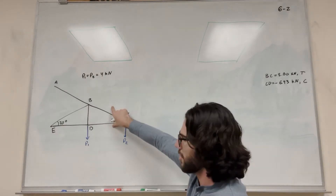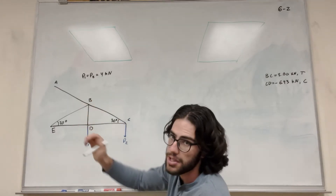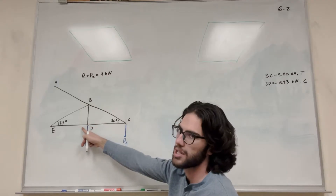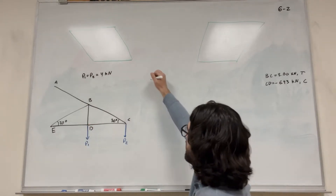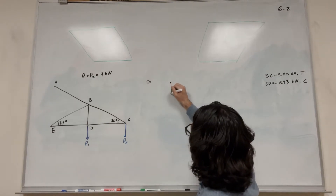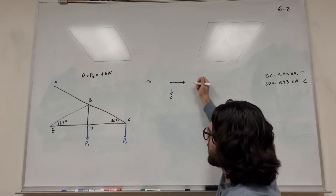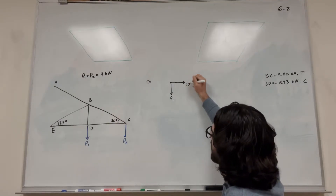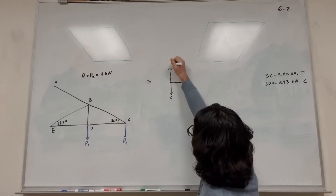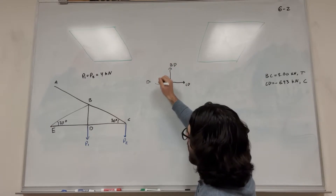Now we know these two forces. If we go to B, we're going to know one of these, but we're still going to have three unknowns, so that's not good. But if we go to D, we know this one, so there's just two unknowns left. So let's go to D. At D, we have P1 pushing downward. To the right, assuming tension, we have CD. Upwards, we have BD. And then over here, we have DE.